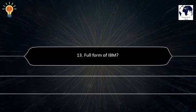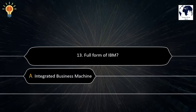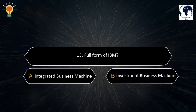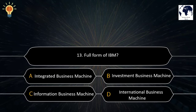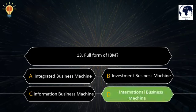Question number 13. What is the full form of IBM? Option A: Integrated Business Machine. Option B: Investment Business Machine. Option C: Information Business Machine. Option D: International Business Machine. The correct answer is Option D — International Business Machine.